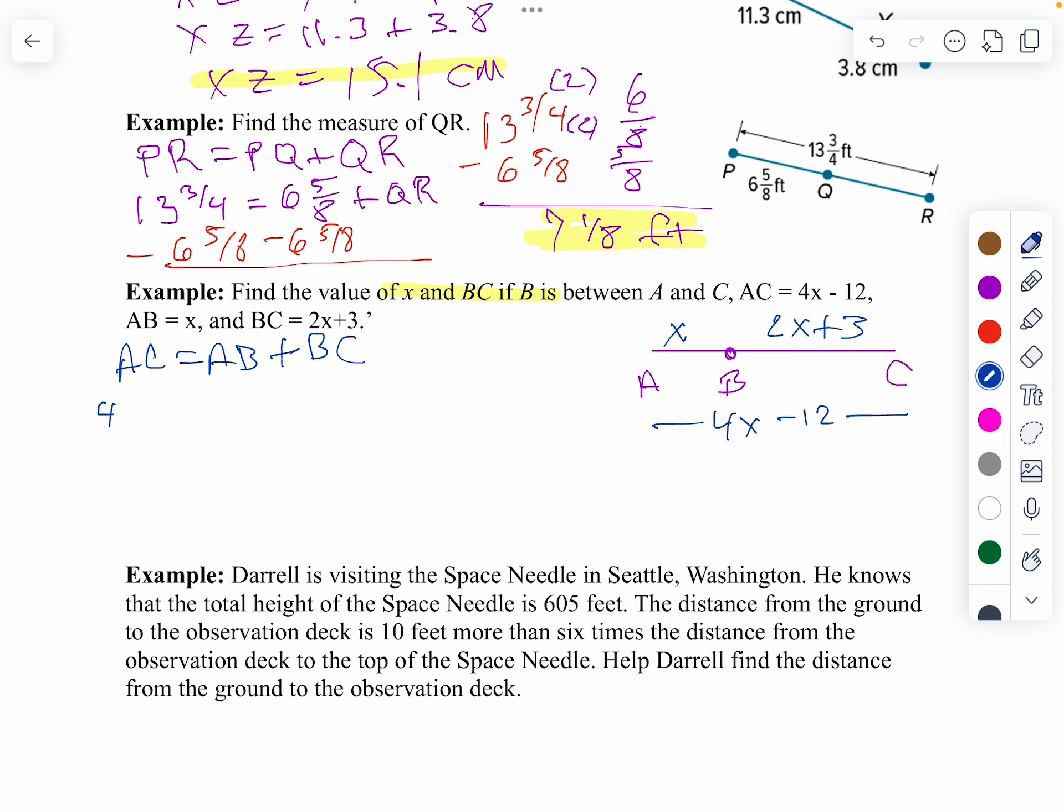So, if we use our segment addition, I know AC equals AB plus BC. Well, A to C is 4x minus 12. A to B is x. And, B to C is 2x plus 3. I can simplify that a little bit. So, I get 3x plus 3 equals 4x minus 12. And then, I can get all my x's on the same side. So, we'll minus 3x from both sides. And, notice when I do that, 4x minus 3x is x. Well, I want to get rid of that 12. So, let's add 12 to both sides right away. So, x equals 15. That's part of our solution. It's not the whole solution, but it's part of our solution.